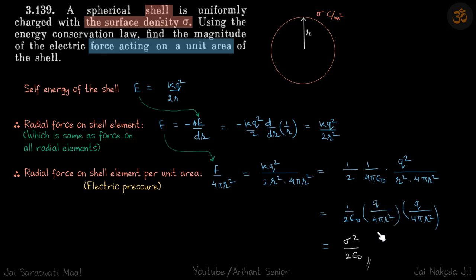So Q by 4 pi r squared is surface charge density, which is given in the problem as sigma. So our electric pressure force per unit area on the shell because of its own charges is sigma squared by 2 epsilon naught, our answer.